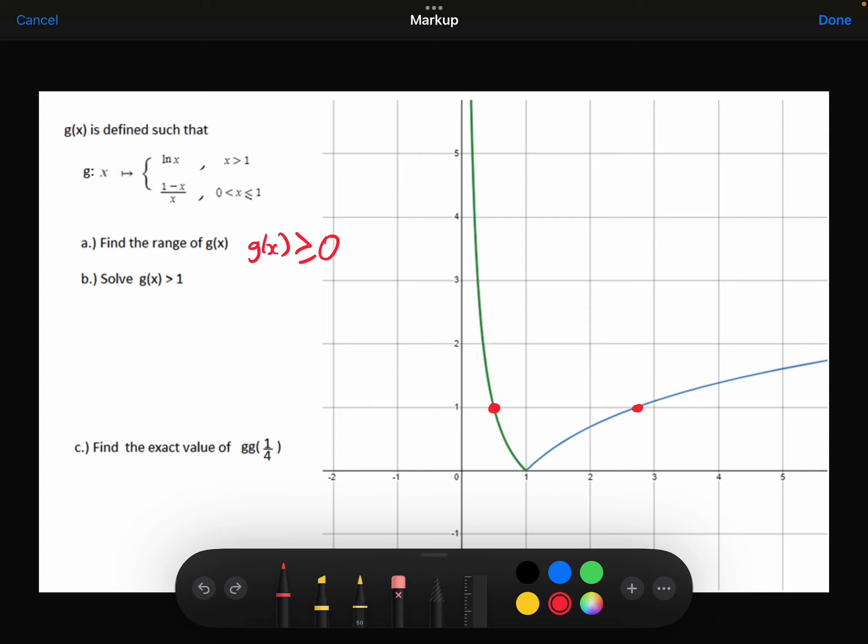So let's find those values first. This value here is going to be where the 1 minus x over x, and I know it's going to be that function there because I can see my answer. So x is going to be between 0 and 1, so that's how I know it's going to be this function.